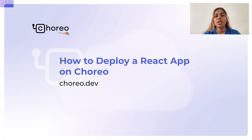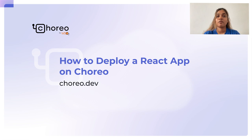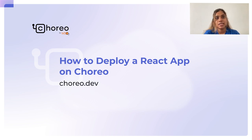Welcome to the how-to series of Choreo. In today's video, we will learn how to deploy a React application on Choreo. Choreo is an internal developer platform as a service which helps you build, deploy, test, run, and monitor your application, helping you get into production faster. We will deploy a sample reading list application which has a React frontend and a Node.js backend. This application allows users to sign in, view their reading list, add books, delete books, and sign out.